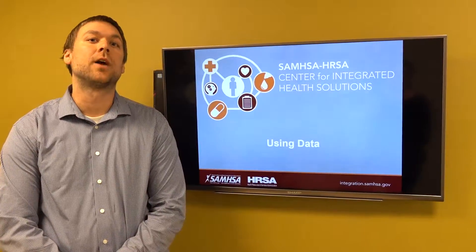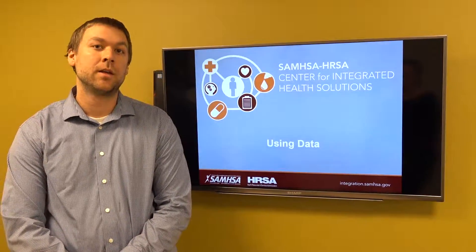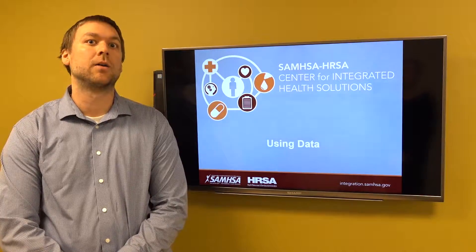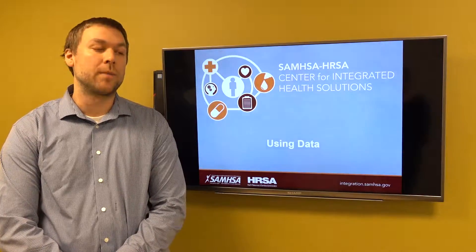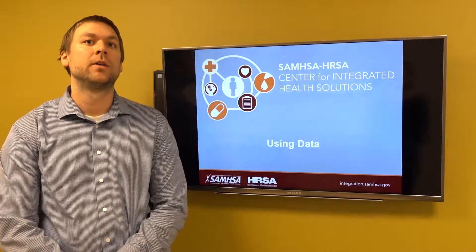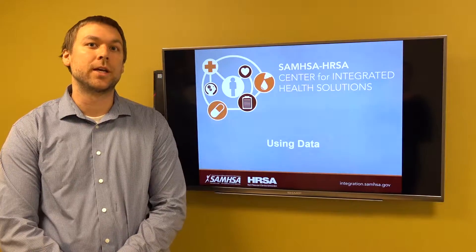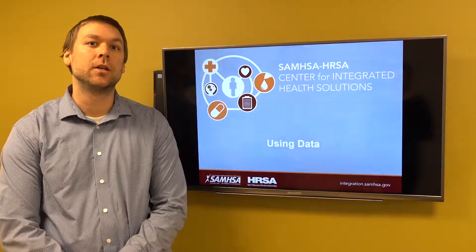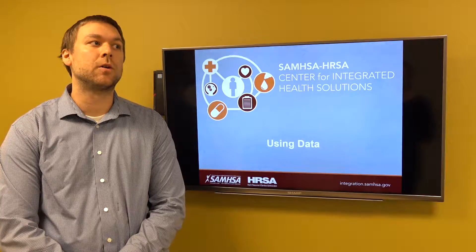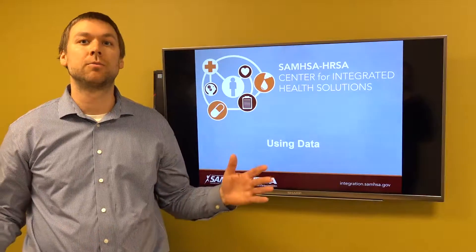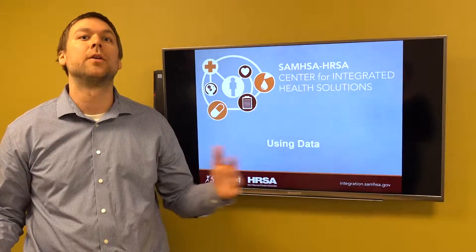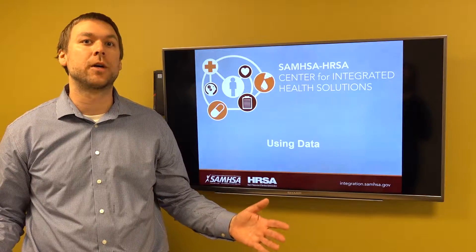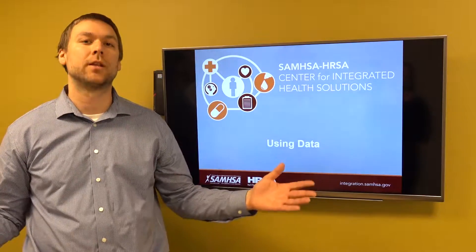The third piece of the toolkit is how to use the data. This is a little bit separate from the grant requirements, which are a grant mechanism to let SAMHSA know that you're collecting all the data and seeing people the way you described in your grant application. Using data is more about how to go above and beyond to promote good care coordination, how to do quality improvement work with your team, and how to show your great outcomes to the world at large.